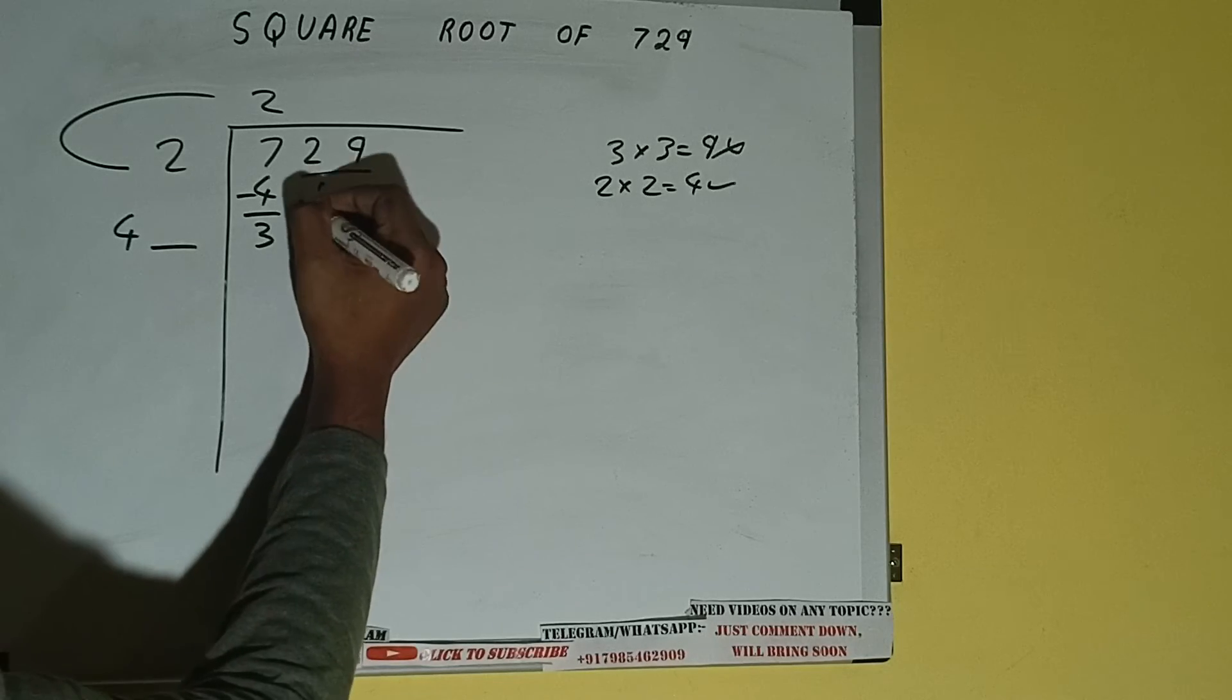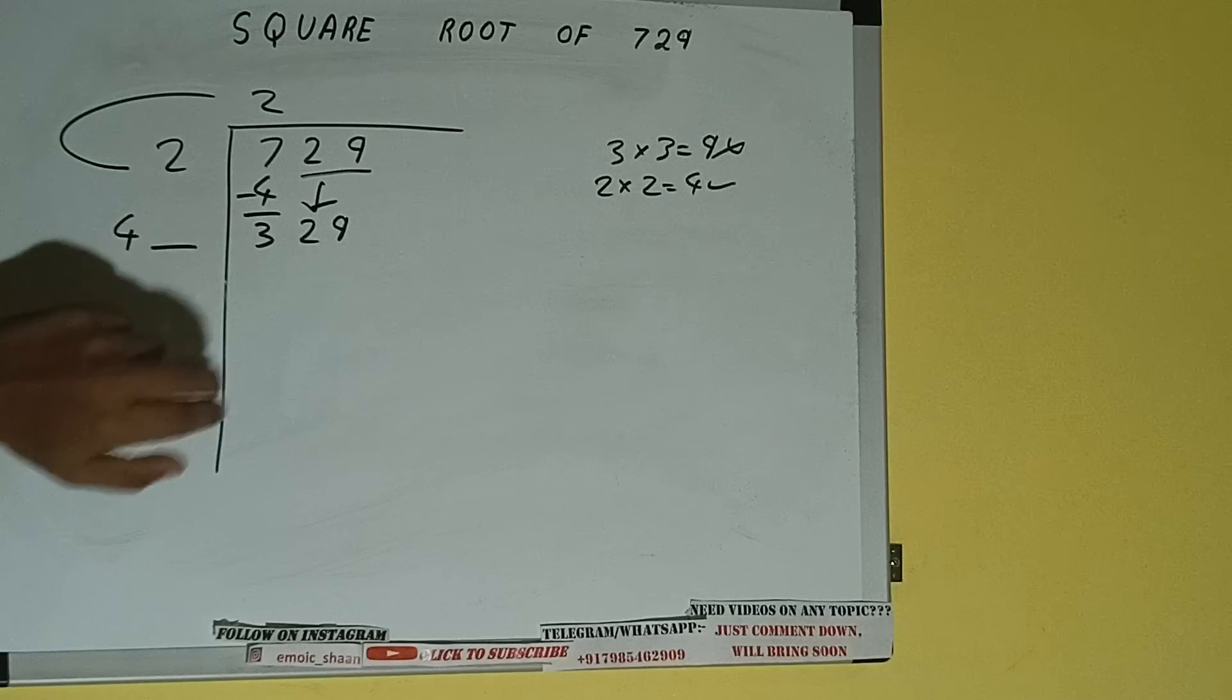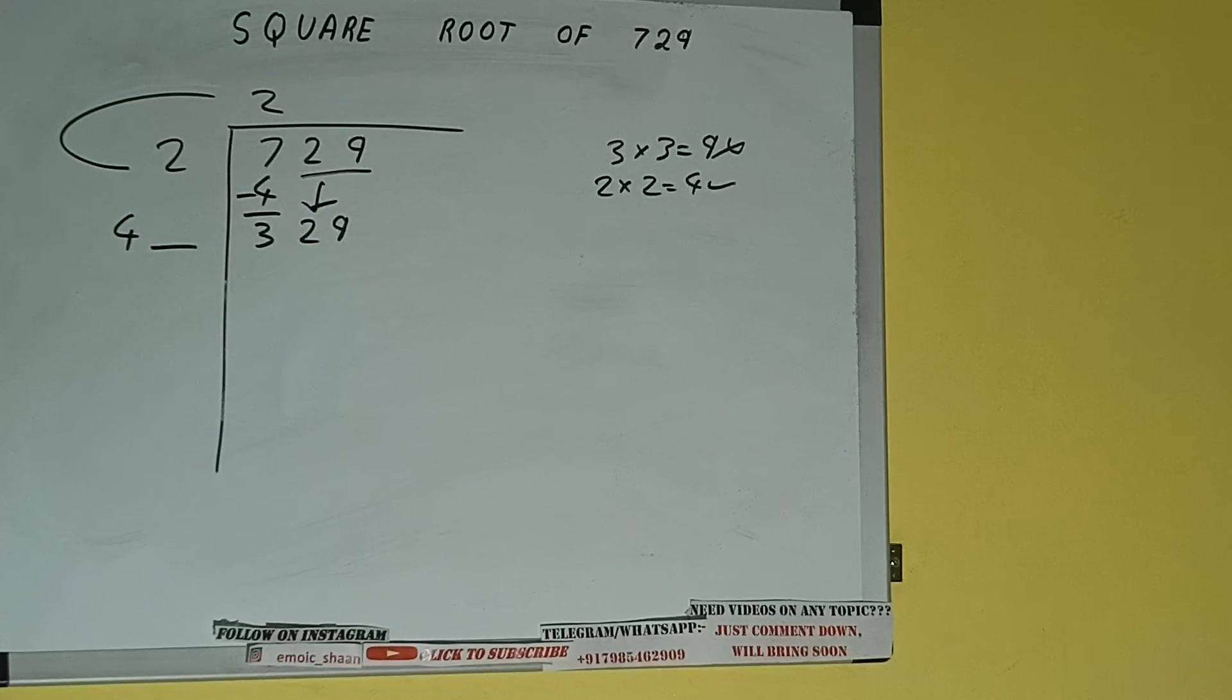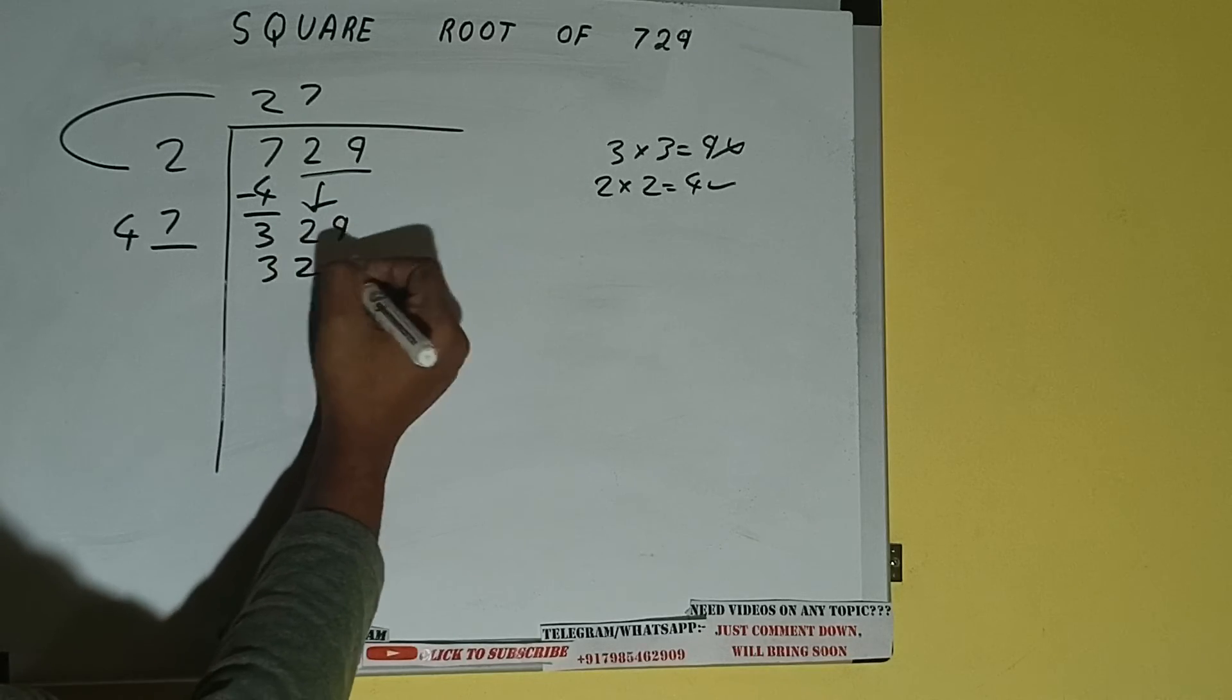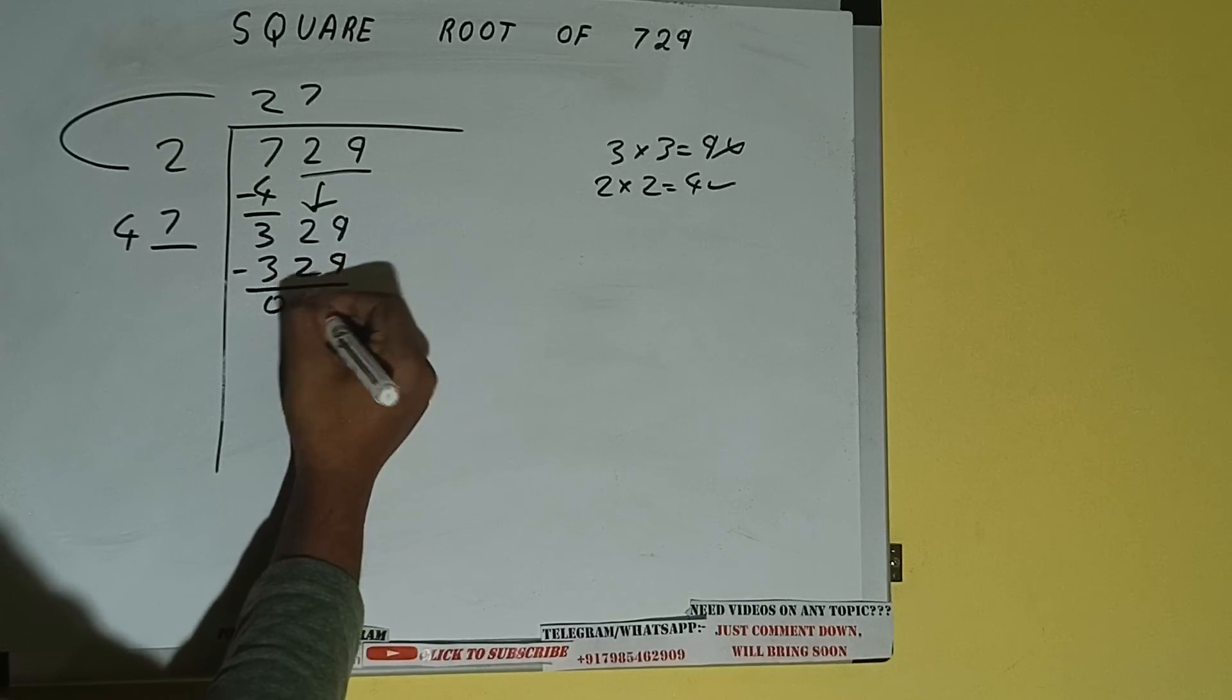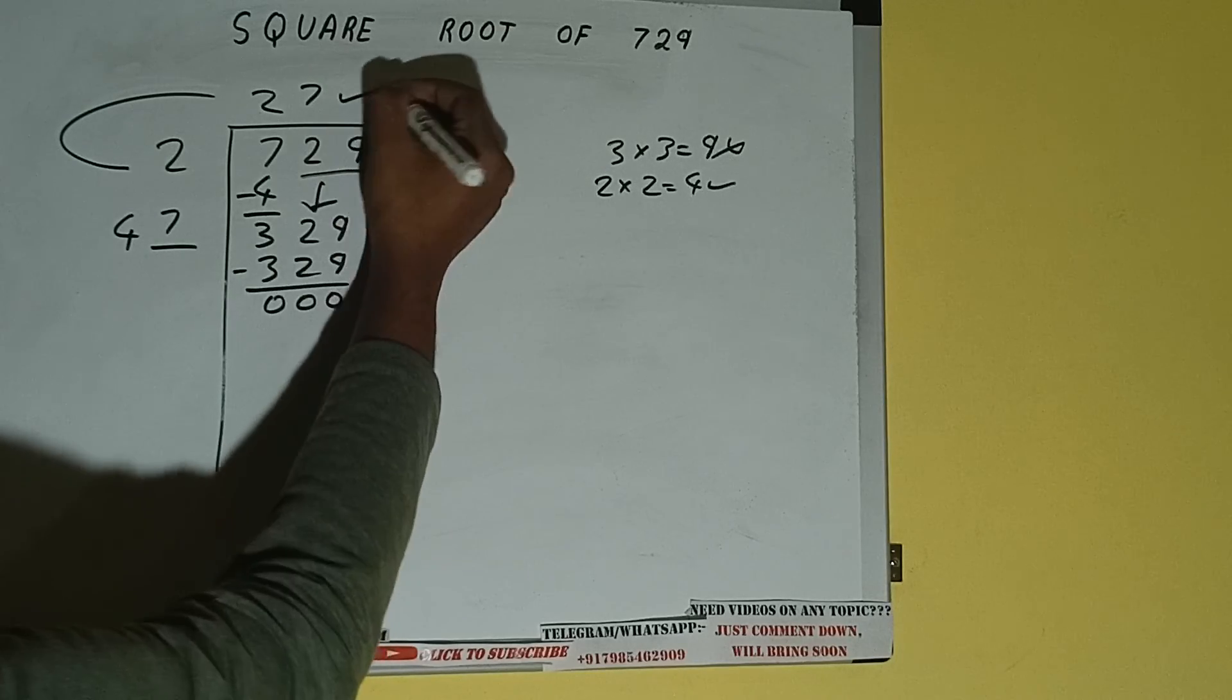So bring the next pair down, and it will be 329. Now, whatever number we write here, we have to write here also. So if we write 7 here and 7 here, we'll be getting 329. Subtract will be left with zero. Once we get zero, whatever is in the quotient will be the answer.